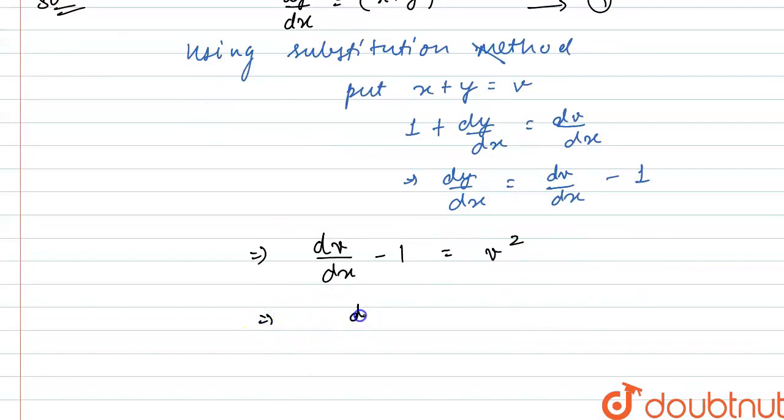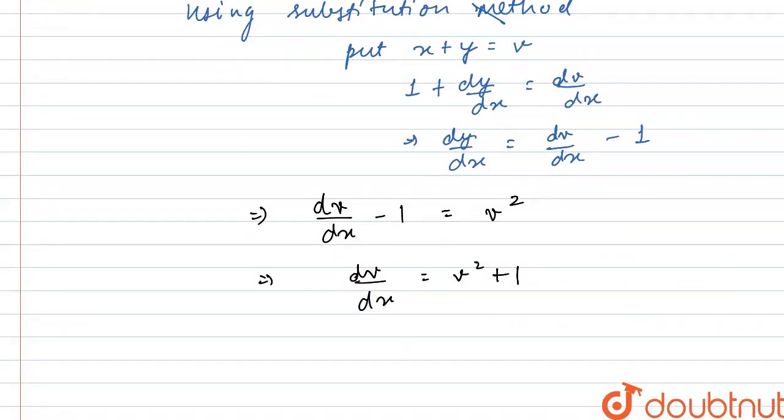Now, I will write this as dv/dx equals v squared plus 1. Now we can separate the variables. On separating the variables we get dv divided by v squared plus 1 equals dx.